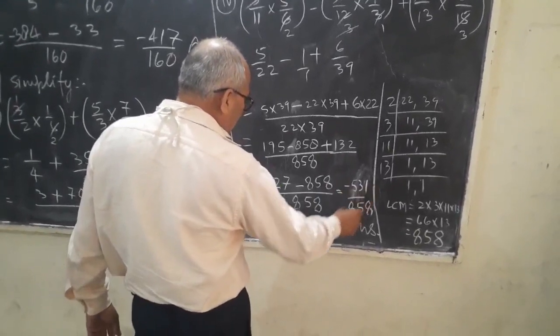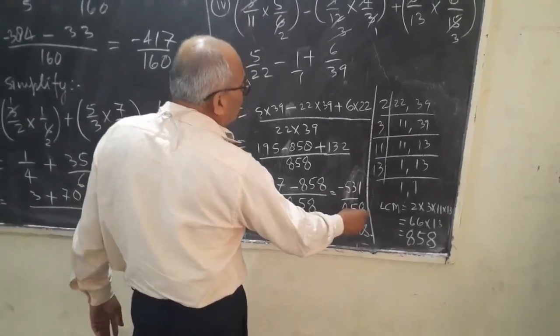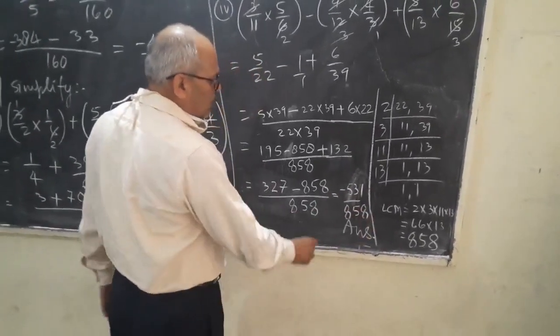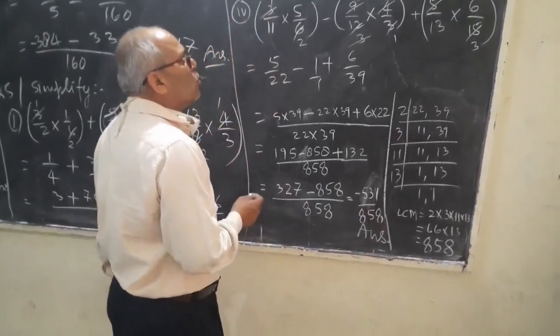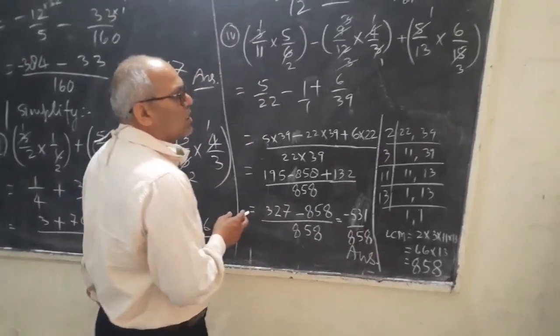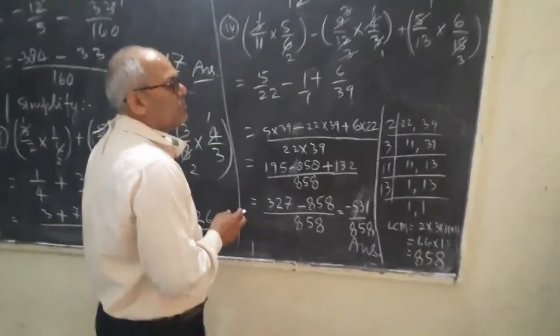That gives minus 531 divided by 858. It is the correct answer. Now you can do the remaining questions in your class copy. Thank you very much.